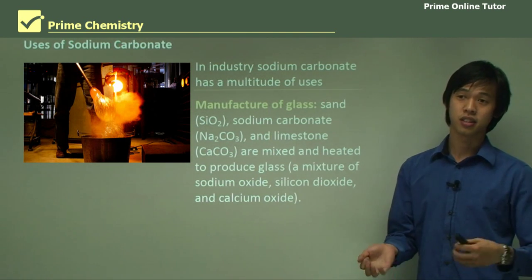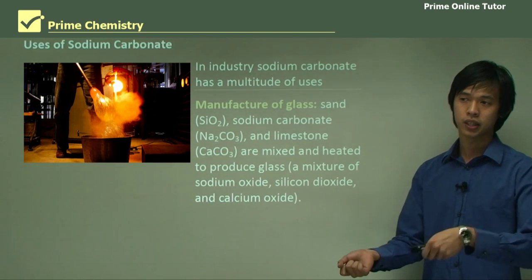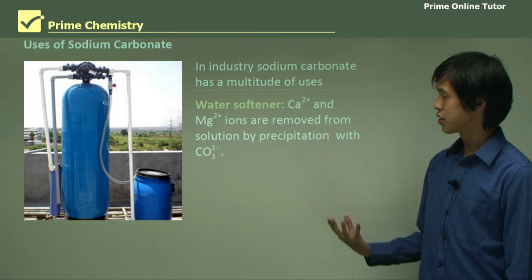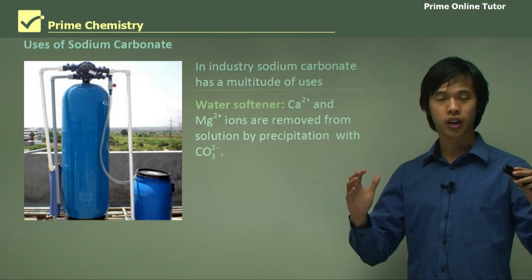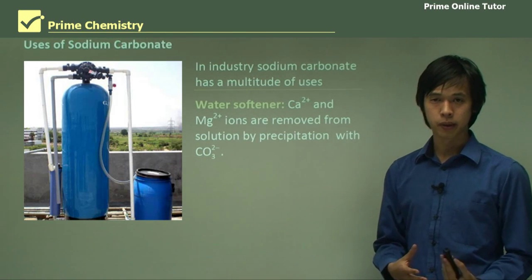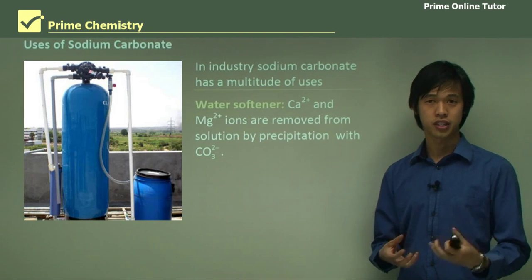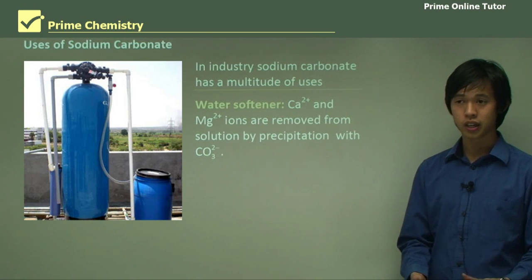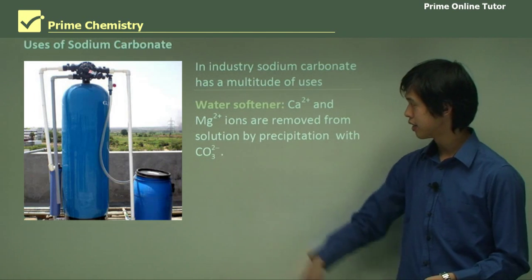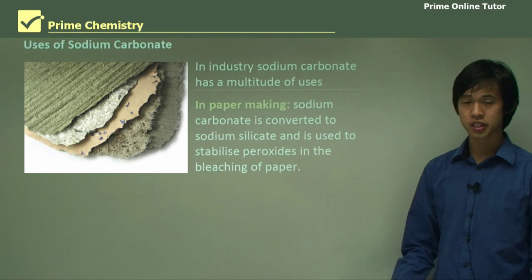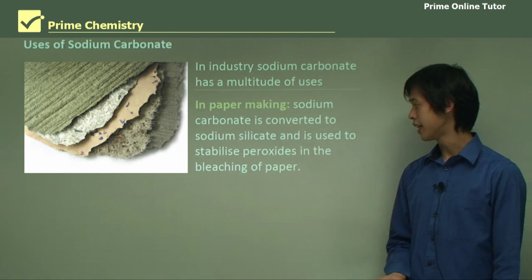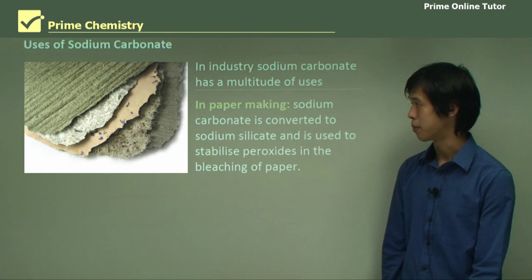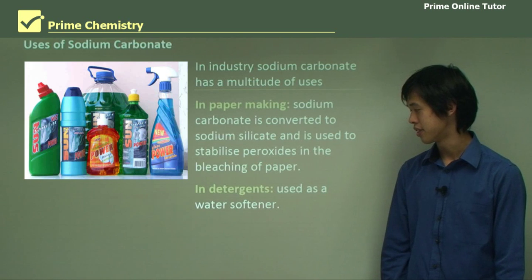Remembering those glass blowers from the olden days — they used to roll glass on a pipe and blow air into it to make it expand into globes. Sodium carbonate is also used as a water softener, since hard water contains calcium or magnesium ions. It's also used in paper making, where it is converted to sodium silicate to stabilise peroxides in the bleaching of paper, and in detergents as a water softener.